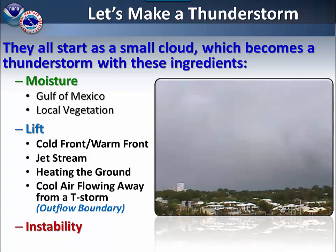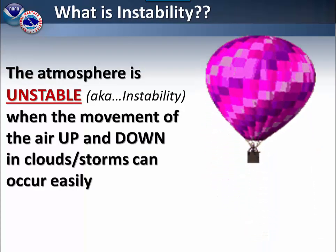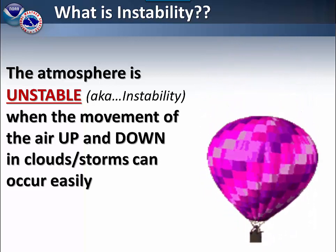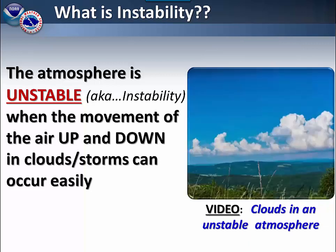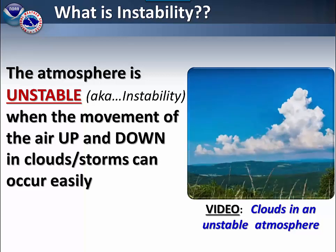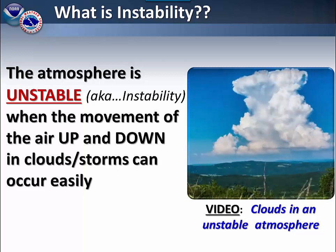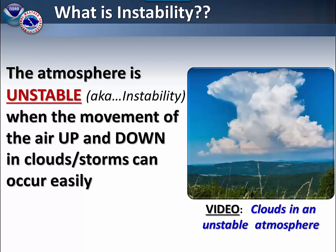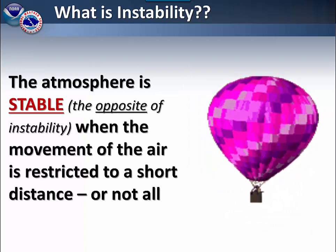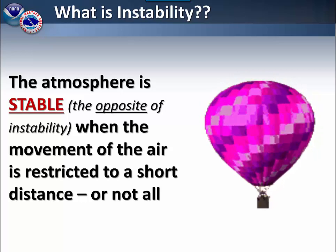And most importantly, thunderstorms need instability. The atmosphere is unstable when the movement of air up and down can occur easily. In the opposite of instability, the atmosphere is considered stable when the movement of air is restricted to a short distance.